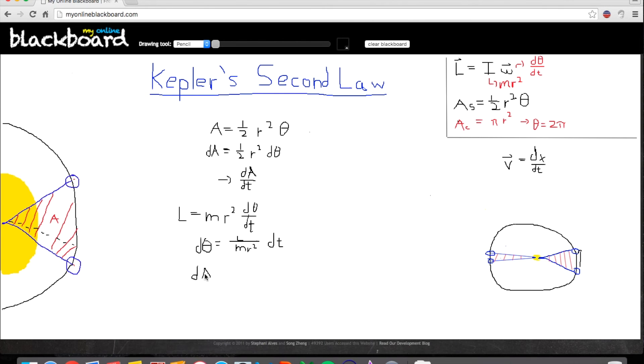So, we have dA equals... And then you should probably see where I'm going with this now. Now, you have r squared multiplied by L over mr squared dt. Now, we're trying to find dA with respect to dt, so we can divide dt on both sides just to get that. We can also, if you notice, cancel the r squareds out.